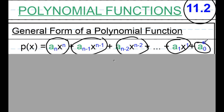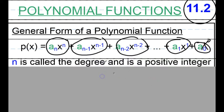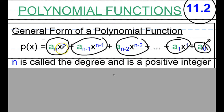And here, this last part is also a constant times the power of x, but the power of x is zero. Because we write polynomial functions generally in terms of decreasing powers of x, so this is x to the zero power. The highest power is called the degree. So as you can see here, from this general form, the degree is n.